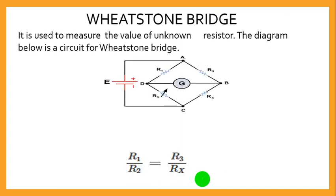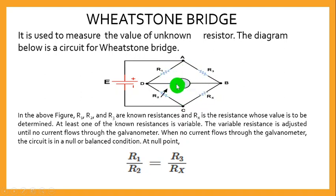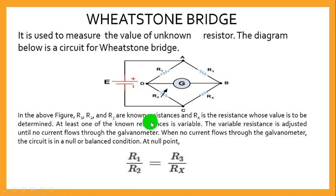The second topic is the Wheatstone Bridge. The circuit diagram for the Wheatstone Bridge contains three fixed resistances — R1, Rx, and R3 — and one variable resistor, R2, whose value can be changed. We use this setup to determine the value of the unknown resistance Rx.